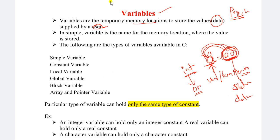In variables, we have different types: simple variable, constant variable, local variable, global variable, block variable, and array and pointer variables. These are all the different types of variables. I will discuss the very important ones here.